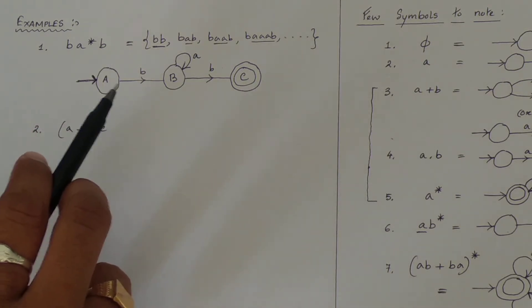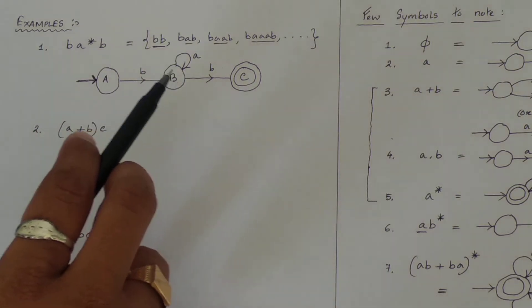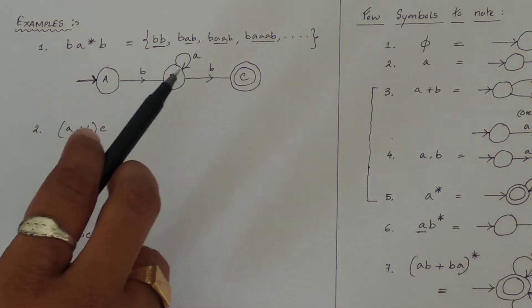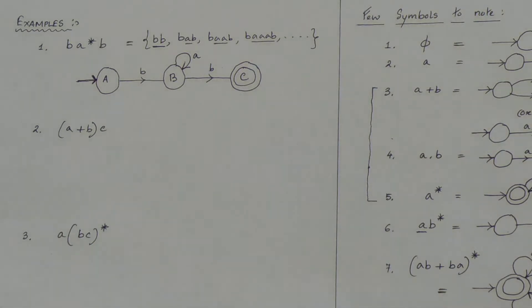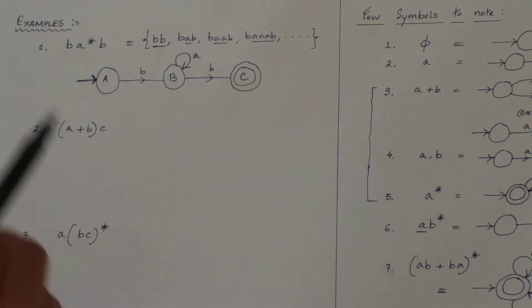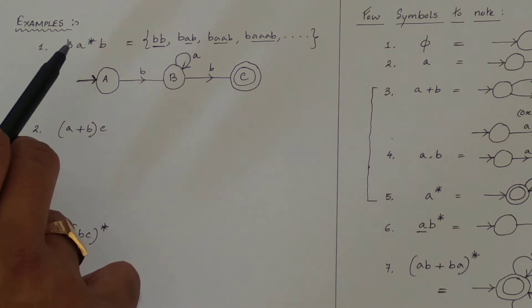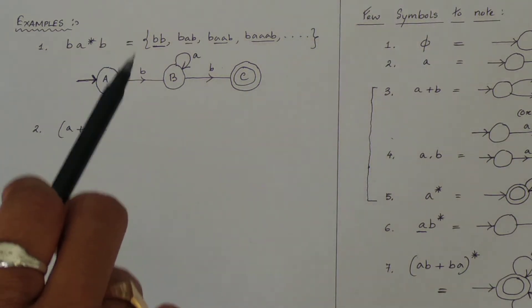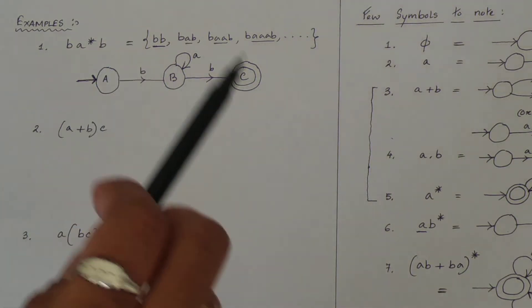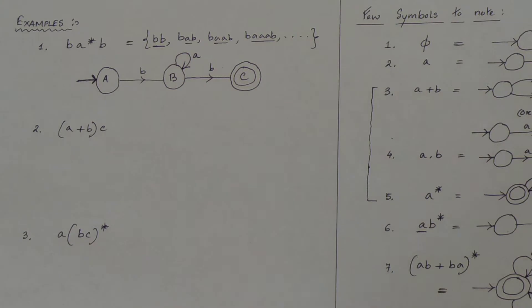Looking at the diagram: b, then a to the power star, then b. If someone asks you for a DFA, you can convert this NFA to a DFA.